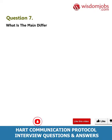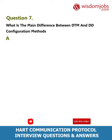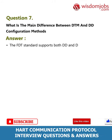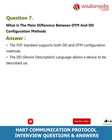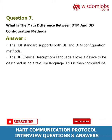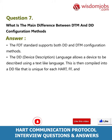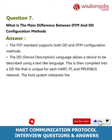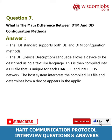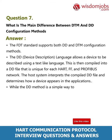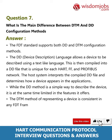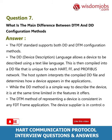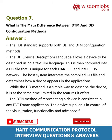Question 7: What is the main difference between DTM and DD configuration methods? Answer: The FDT standard supports both DD and DTM configuration methods. The DD device description language allows a device to be described using a text-like language, which is then compiled into a DD file that is unique for each HART, FF, and PROFIBUS network. The host system interprets the compiled DD file and determines how a device appears in the applications. While the DD method is a simple way to describe the device, it is at the same time limited in the features it offers. The DTM method of representing a device is consistent in any FDT frame application; the device supplier is in control of the visualization, functionality, and advanced features.